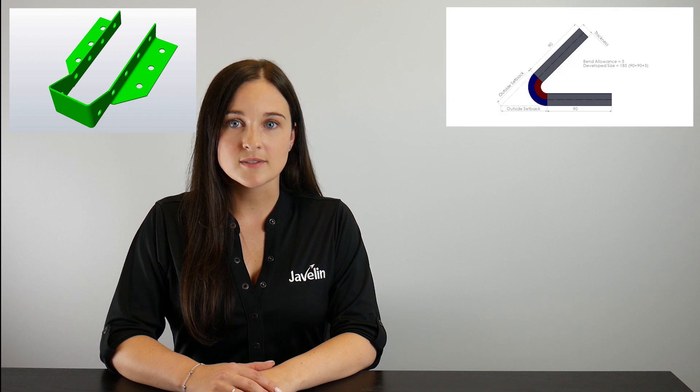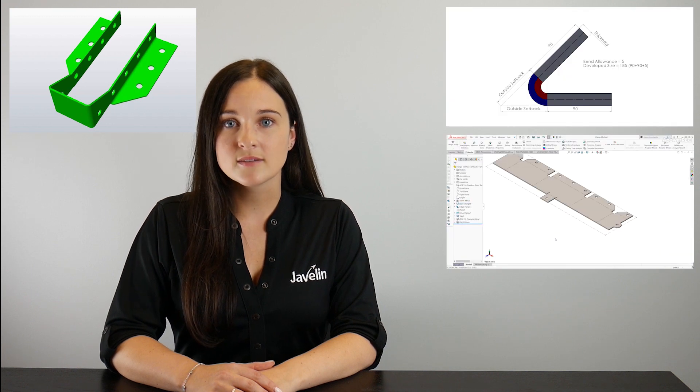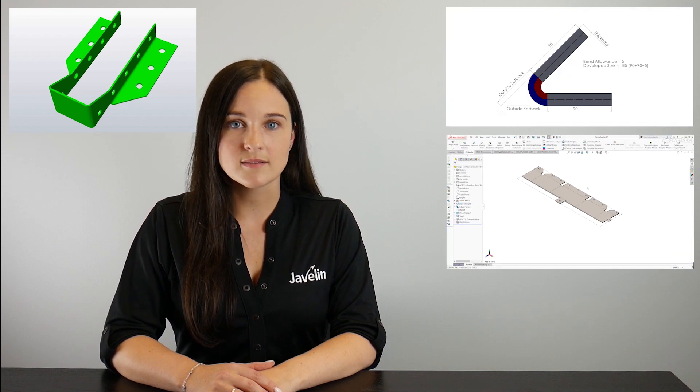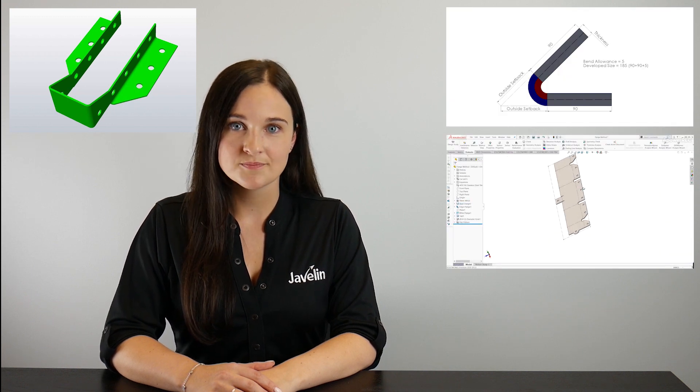The course starts by showing sheet metal parts and methods. These include flanges, bend allowances, flat patterns, hems, cuts, and more.